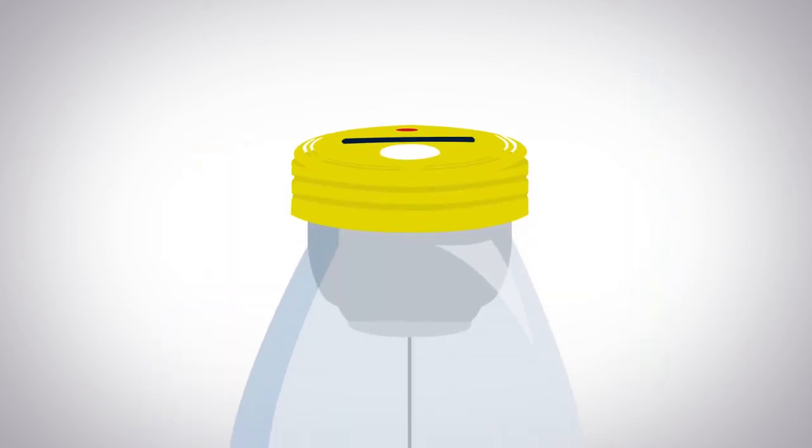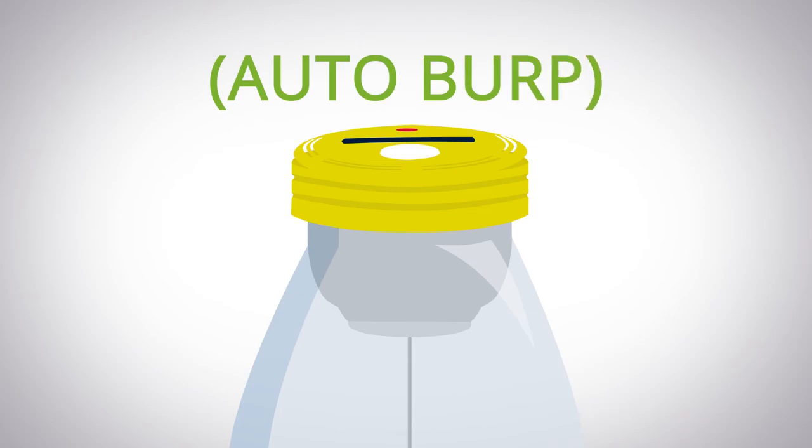When the humidity levels reach your programmed level, the cork will automatically burp the container, ensuring that your herbs are able to breathe at the ideal moment.